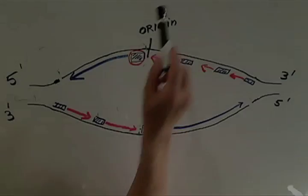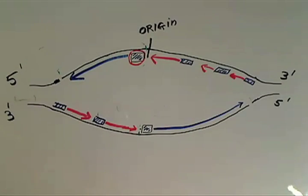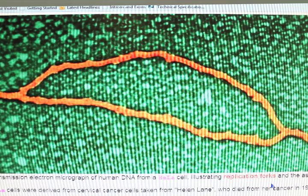DNA replication starts at the origin of replication. At the origin, the DNA is melted and replication forks go off in both directions, forming a replication bubble. The replication bubble can actually be seen in the electron microscope.